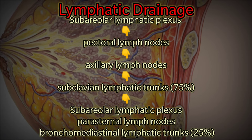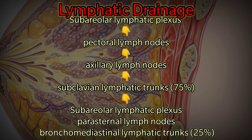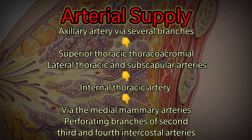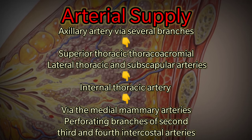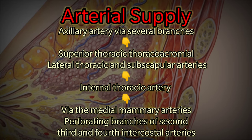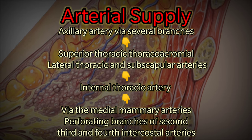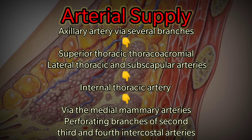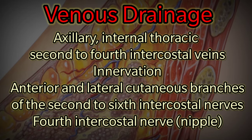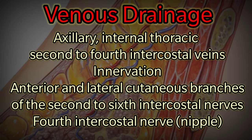The remaining 25% drains from the sub-areolar lymphatic plexus to parasternal lymph nodes, then to broncho-mediastinal lymphatic trunks. Arterial supply comes from the axillary artery via several branches — superior thoracic, thoraco-acromial, lateral thoracic, and subscapular arteries — as well as the internal thoracic artery via the medial mammary arteries, and perforating branches of the second, third, and fourth intercostal arteries. Venous drainage is via axillary, intercostal, internal thoracic, and second to fourth intercostal veins.